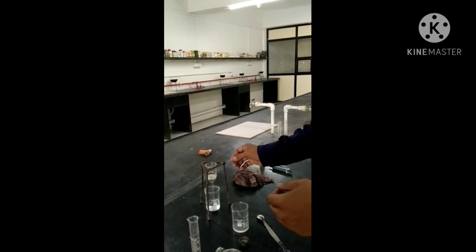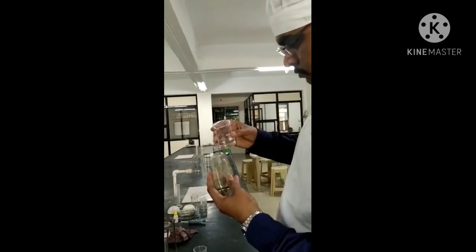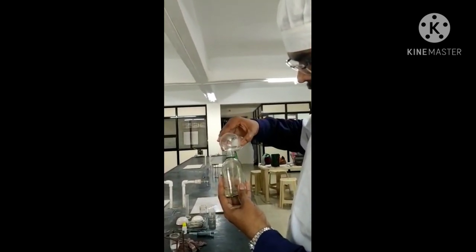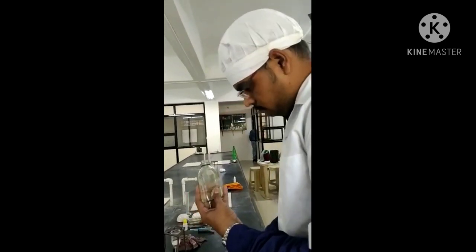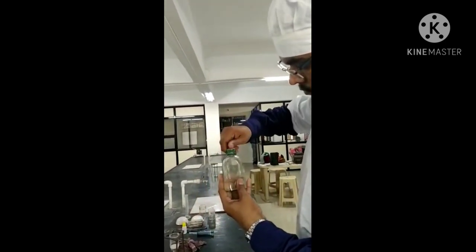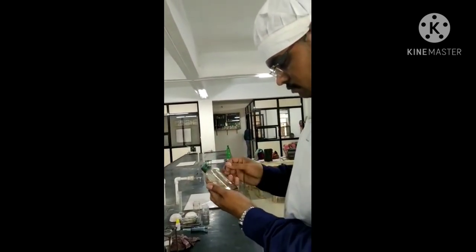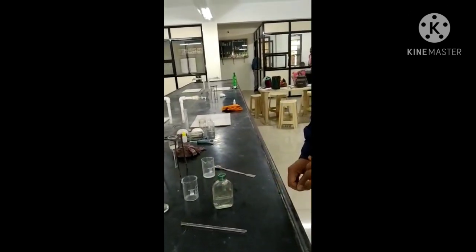After filtration, take that preparation. Transfer that preparation into the bottle properly. Cork it properly and attach the label and submit the preparation. This is eye lotion of zinc chloride. Thank you.